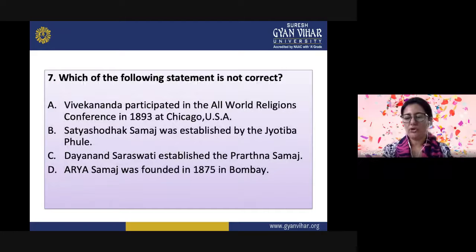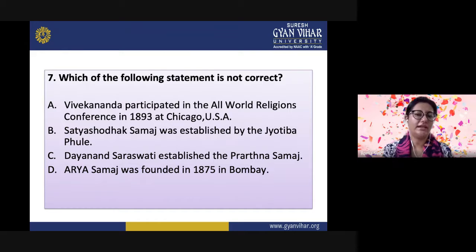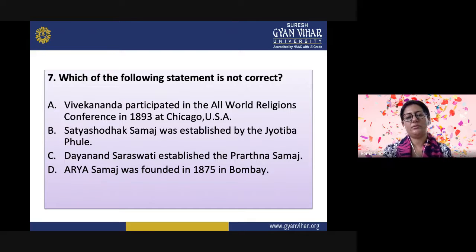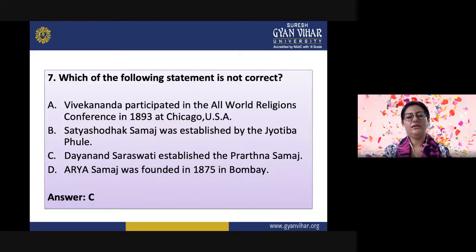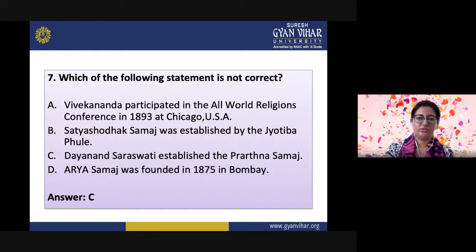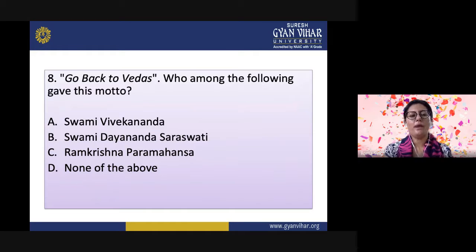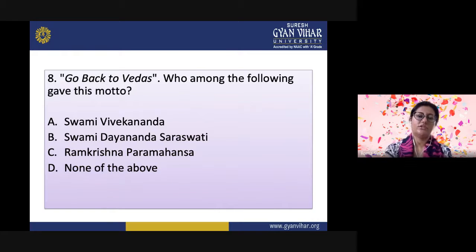Question 7: Which of the following statements is not correct? Options are: Vivekananda participated in the World Religious Conference in 1893 at Chicago, USA; Satya Shodak Samaj was established by Jyotiba Phule; Dayanand Saraswati established the Prarthana Samaj; Arya Samaj was founded in 1875 in Bombay. The correct answer is C — Dayanand Saraswati did not found the Prarthana Samaj; the other three options are correct. Question 8: 'Go back to the Vedas' — who among the following gave this motto? Options are: Swami Vivekananda, Swami Dayanand Saraswati, Ramakrishna Paramahansa, or none of the above. The correct answer is Swami Dayanand Saraswati.